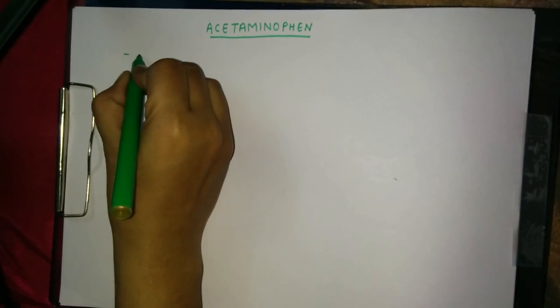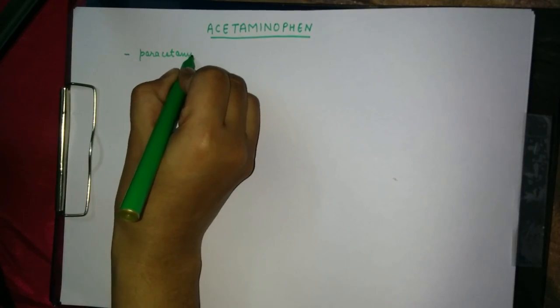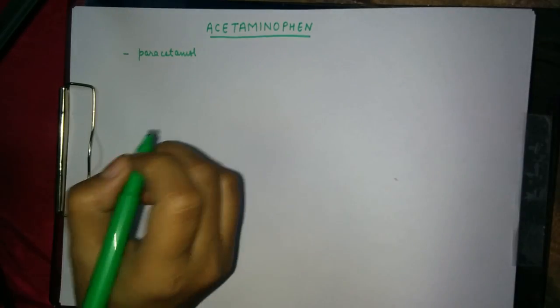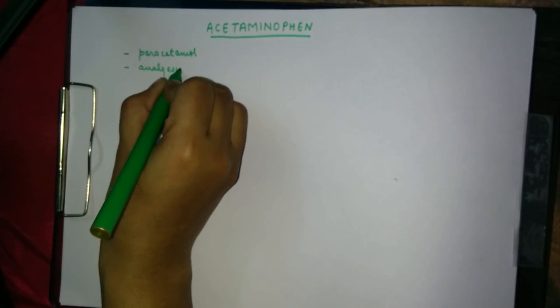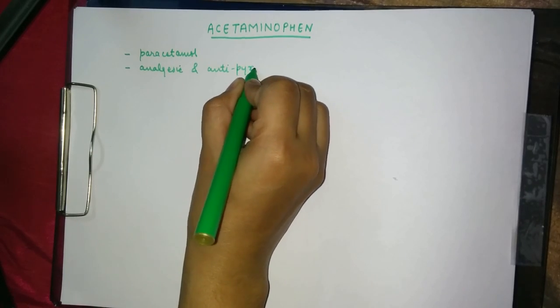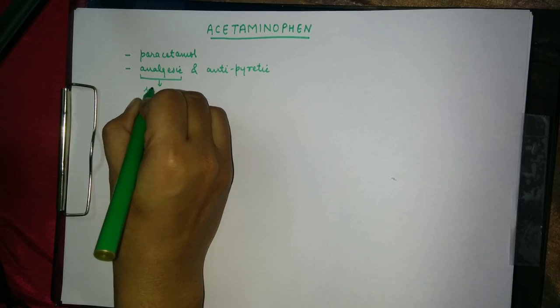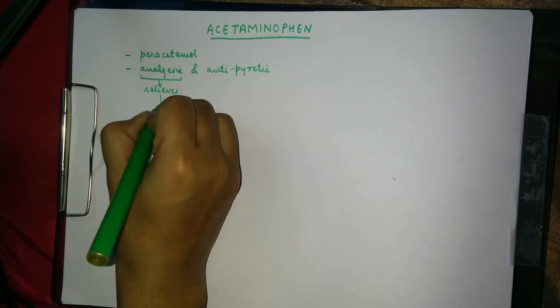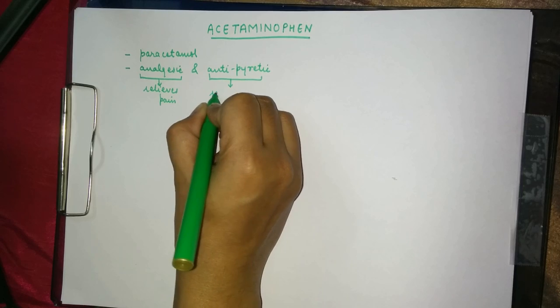Acetaminophen, also called paracetamol, is a popular and widely available over-the-counter analgesic and antipyretic drug. Analgesic is a drug that relieves pain, and antipyretic is a drug that reduces fever.